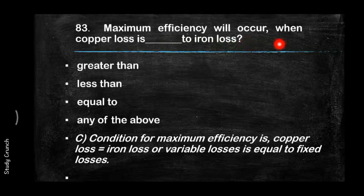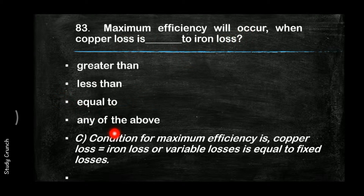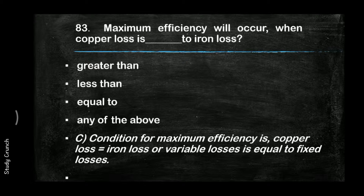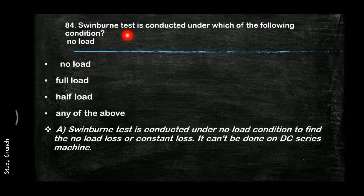Maximum efficiency will occur when the copper loss is equal to the iron loss. The condition of maximum efficiency is when copper loss equals iron loss.